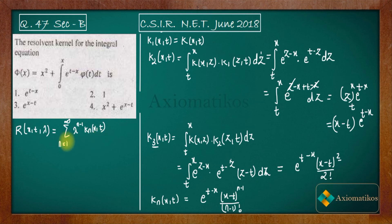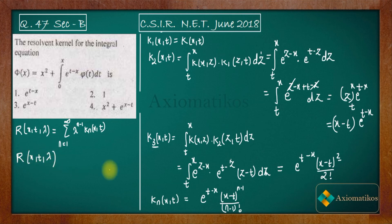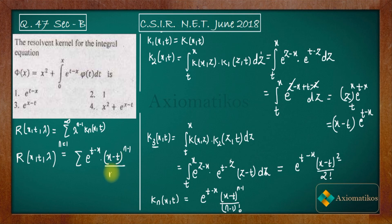Using the formula for the resolvent kernel and knowing that λ = 1 (from our earlier comparison), the resolvent kernel is simply the summation of e^(t − x) · (x − t)^(n−1) / (n−1)!, where n varies from 1 to infinity.